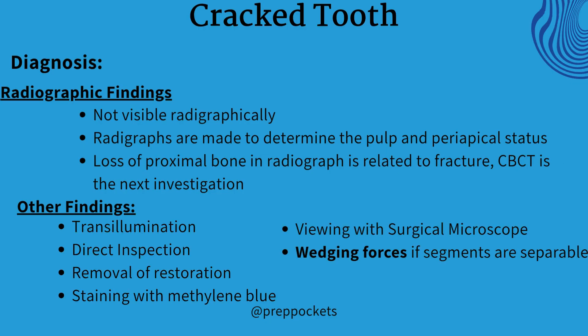Some other findings that help diagnose the cracked tooth include transillumination, direct visualization, removal of existing restoration, using a surgical microscope, methylene blue staining, and wedging forces if segments are separable. This technique helps distinguish it from the split tooth. If a fracture is detected, the instrument is placed in the cavity with moderate pressure exerted on opposing walls to try to separate the segments. If no movement is detected, it is a cracked tooth. If the segment is separated, it is a split tooth.